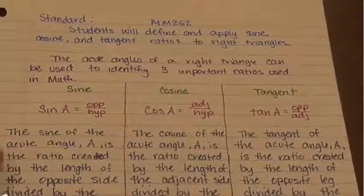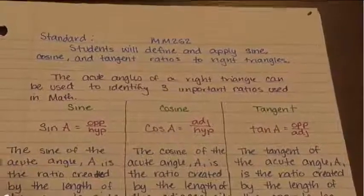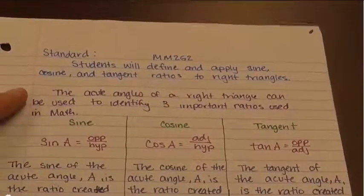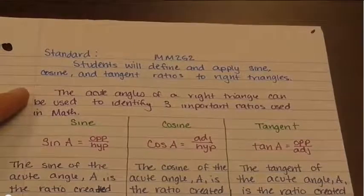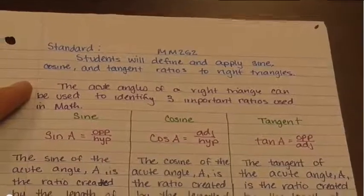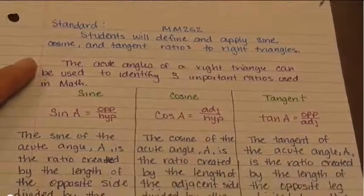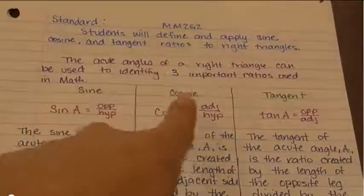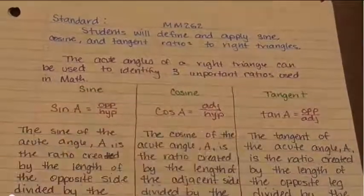So now we're going to start talking about trigonometric ratios. The acute angles of a right triangle can be used to identify three important ratios in math: sine, cosine, and tangent.